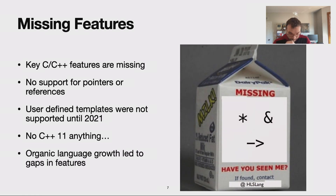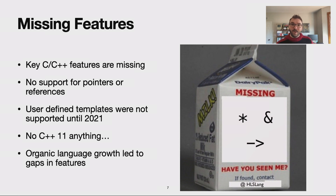HLSL has some pretty big missing features from C and C++, and this impacts how we implement our standard library. As the title suggests, the standard library actually isn't expressible in HLSL by itself. The absence of pointers and references, for example, is a really big challenge. We also didn't have user-defined templates until 2021, but the standard library does use templates. We don't currently have any of the major C++11 features available, and we're working to close those gaps.